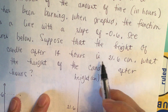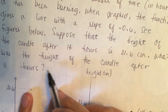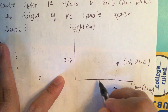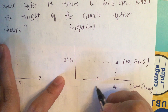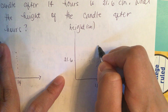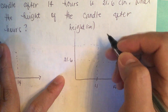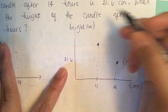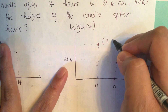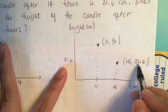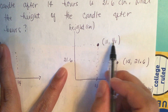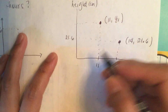They also ask what the height is after 11 hours, so we mark 11 hours on the graph. This gives us the point (11, y1), and we need to find y1 — the height in centimeters. We have two points, so we just need to solve for y1 using the given slope.